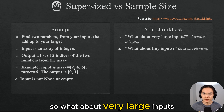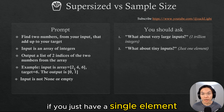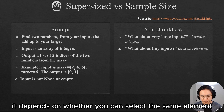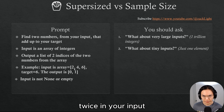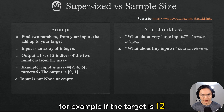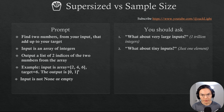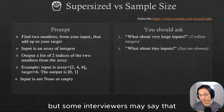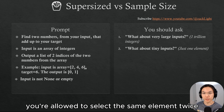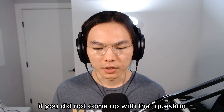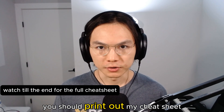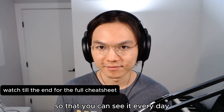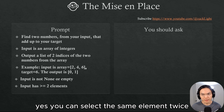So what about very large inputs? What about tiny inputs? If you just have a single element, could it possibly be a valid input? It depends on whether you can select the same element twice in your input — and that's the most important question you should ask. For example, if the target is 12, you can only get 12 by selecting six twice. But some interviewers might say you are allowed to select the same element twice, and some might say not. If you did not come up with that question, you should print out my cheat sheet and hang it by your monitor so you can see it every day.